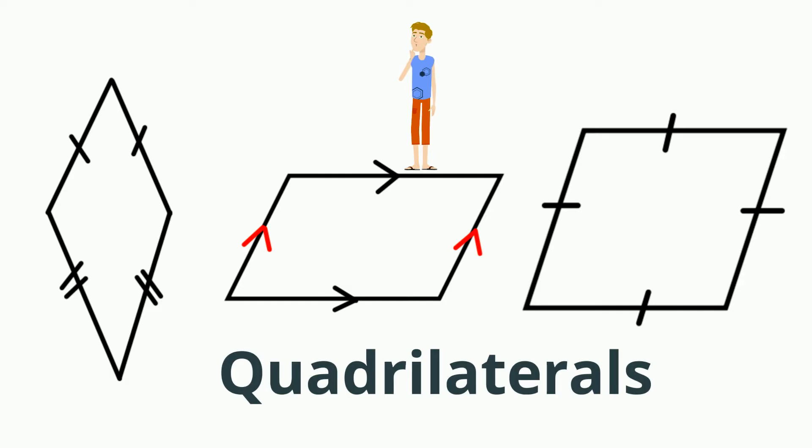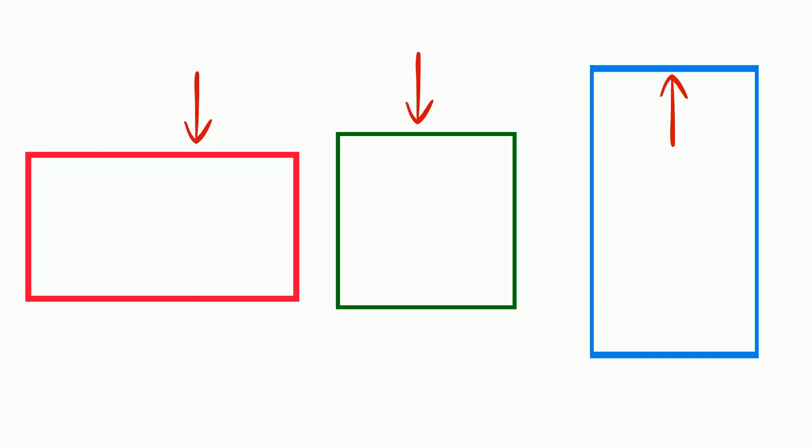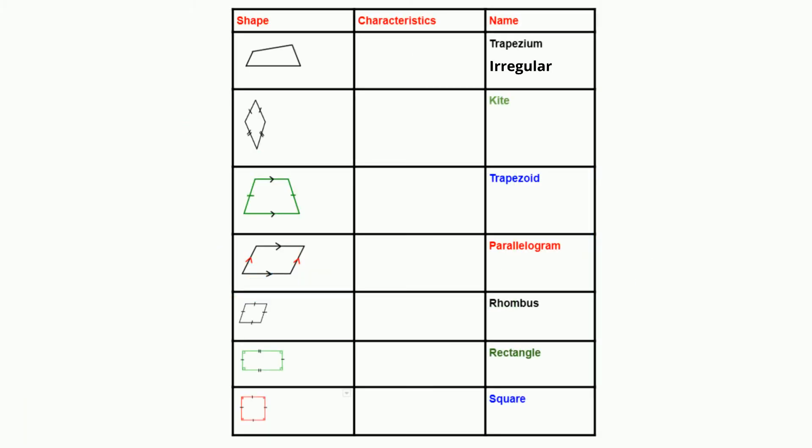Quadrilaterals are classified according to their side lengths and angles. If you take a look at this chart, we will try to make sense of this. And as you move down the chart, the quadrilaterals get a little bit more specific. So let's get started.